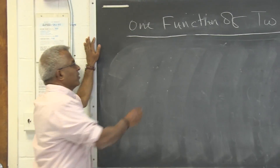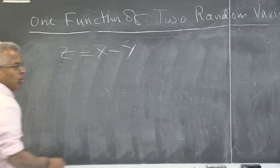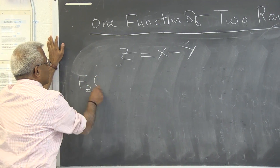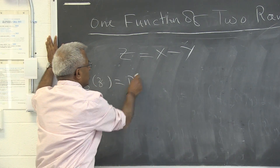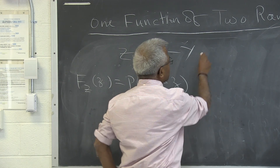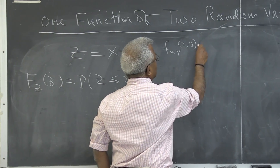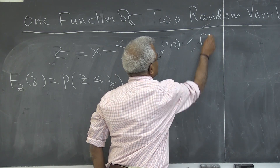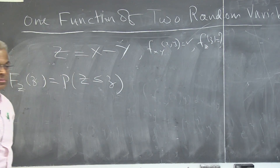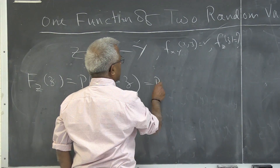Let us look at another example. The natural next example is Z = X minus Y. We start with its distribution function, probability of Z less than or equal to z. The joint density function of X and Y is given and we want the density function of Z. In this case, Z is given to be X minus Y.